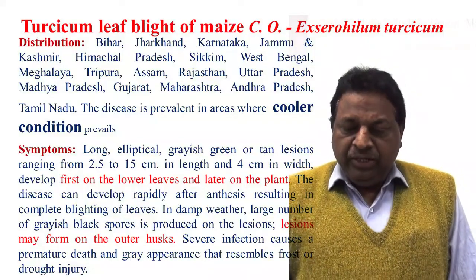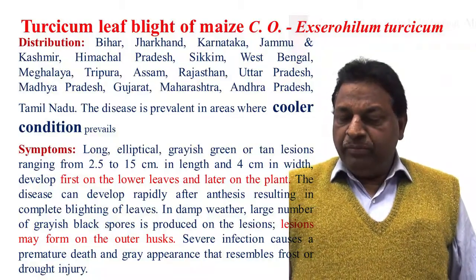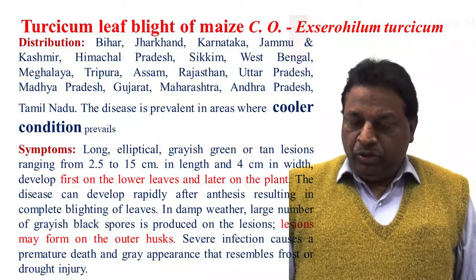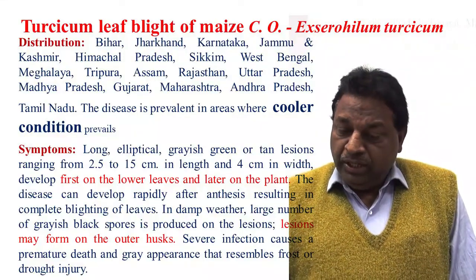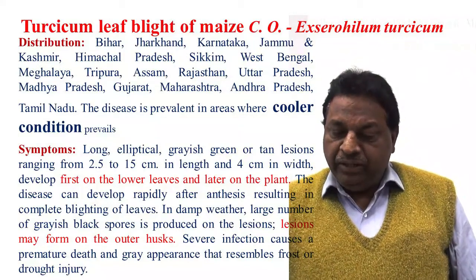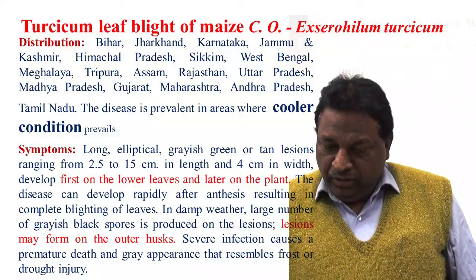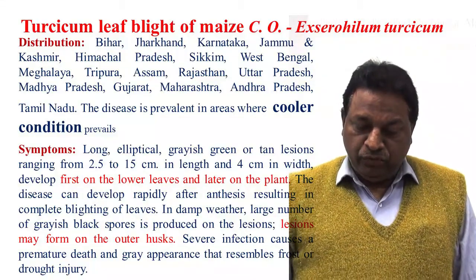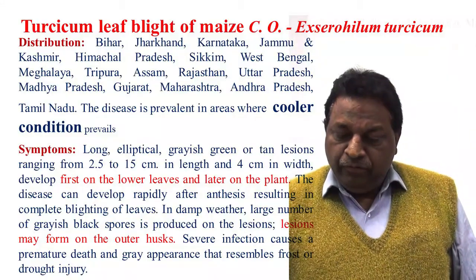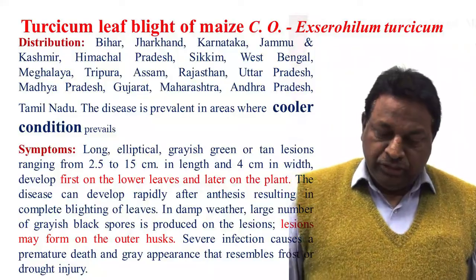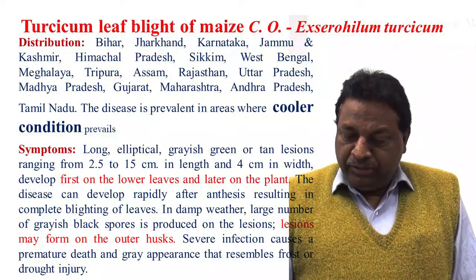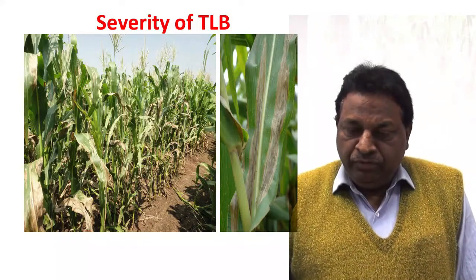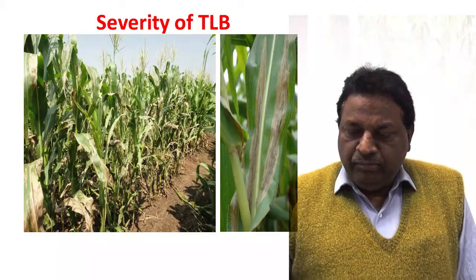The symptoms of the disease are long elliptical gray-green or tan lesions ranging from 2.5 to 15 centimetres in length and 4 centimetres in width, developing on the lower leaves. The disease symptoms generally occur on lower leaves first and later the disease can develop rapidly, resulting in complete blighting of leaves in damp weather. Under severe conditions, large numbers of gray-black spores are formed on the lesions. Severe infection causes premature death and a gray appearance of the plant.